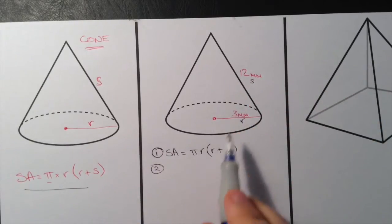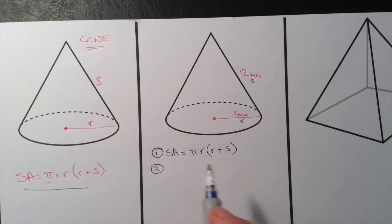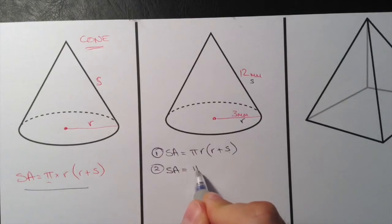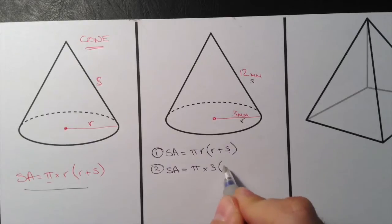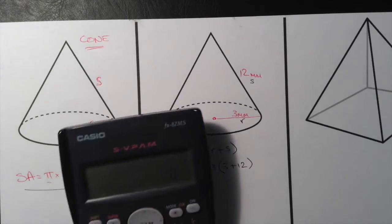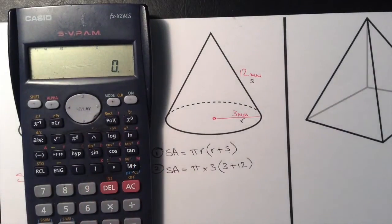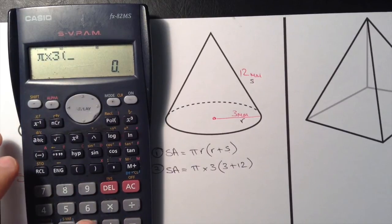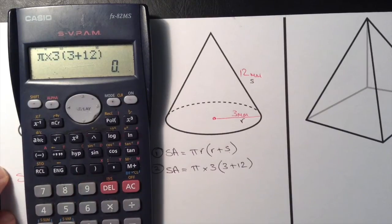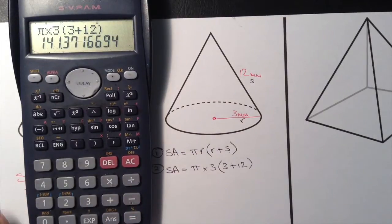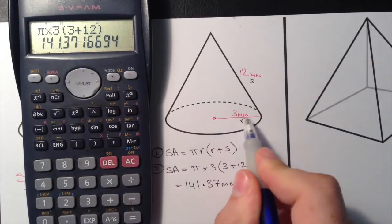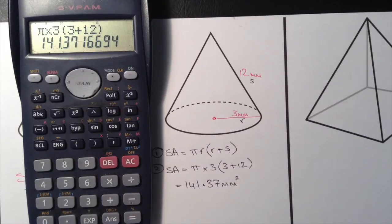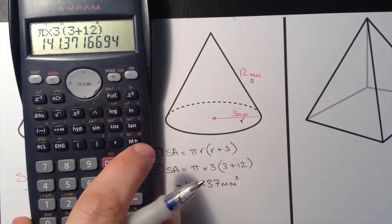The second step involves taking those numbers and substituting them into the formula at the appropriate spots. Surface area equals pi times 3, and then in brackets 3 plus 12. We plug those numbers into our calculator: pi times 3, open bracket, 3 plus 12, close bracket, hit equals, and we get an answer of 141.37 millimetres squared. We keep our units and add squared because we're working out a surface area.